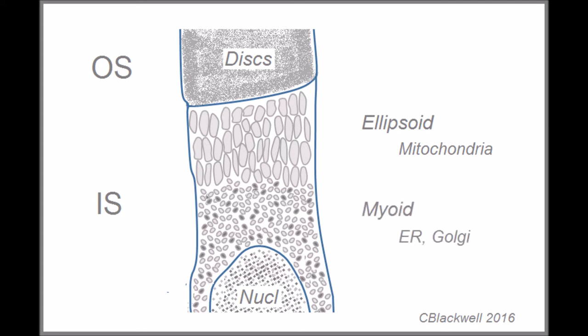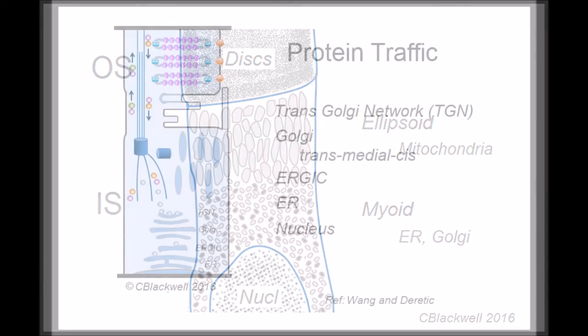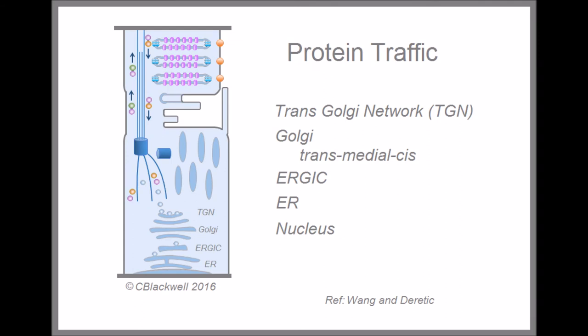Between the ellipsoid region and the nucleus is the myoid region. This diagram view shows the myoid region contains the endoplasmic reticulum and Golgi apparatus in which the mRNA directs protein assembly. Additional packaging occurs in the Golgi apparatus.